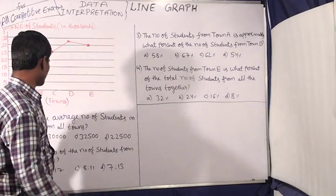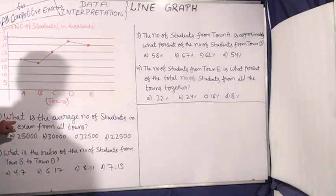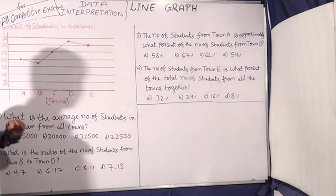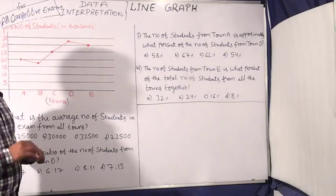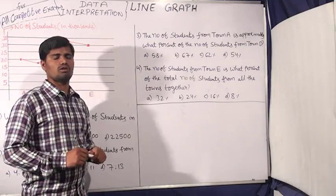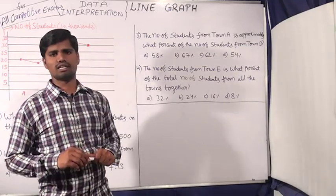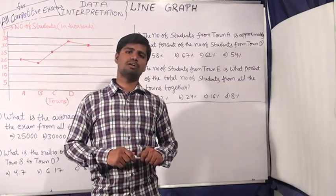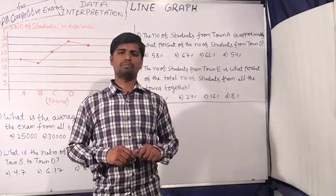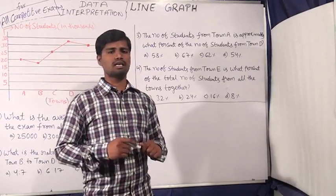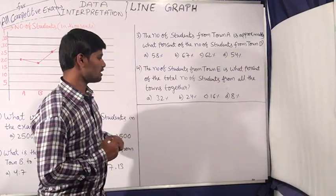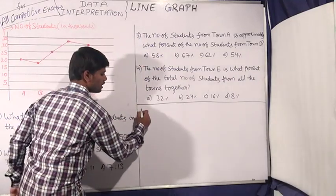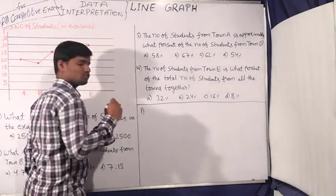First question: what is the average? Average is the sum of observations divided by the number of observations. Then you can answer the question.